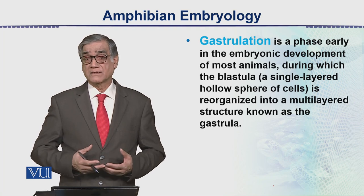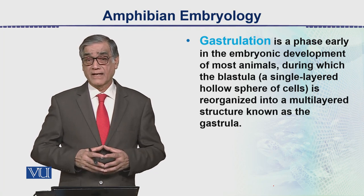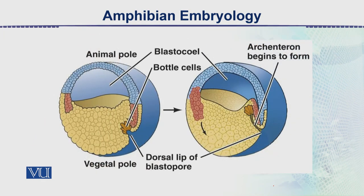This multi-layered embryo can be differentiated into distinct layers: there is an ectoderm, then a mesoderm, and an endoderm. In this diagram we can see the animal pole and a sagittal section as a diagrammatic representation.